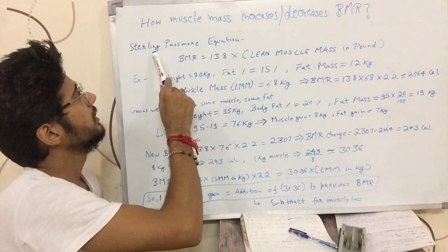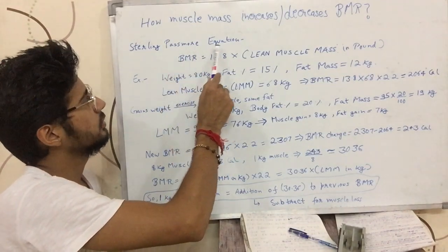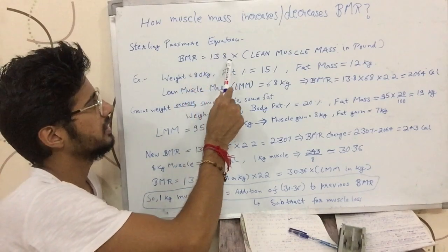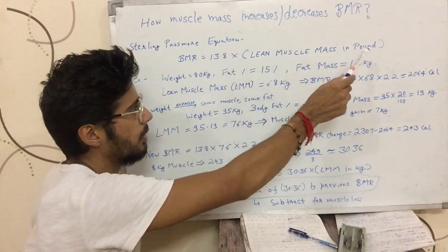In the previous videos, I told you, according to Sterling-Pastmore equation, BMR is 13.8 into lean muscle mass in pounds.